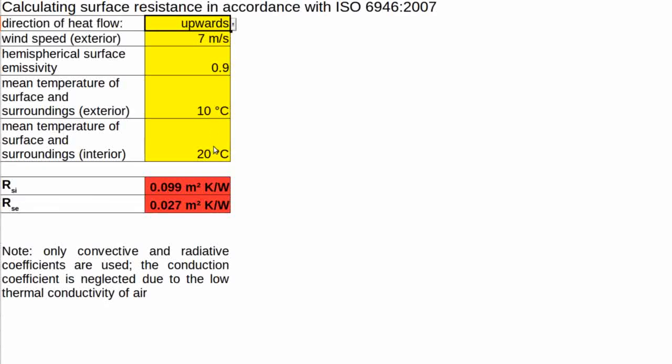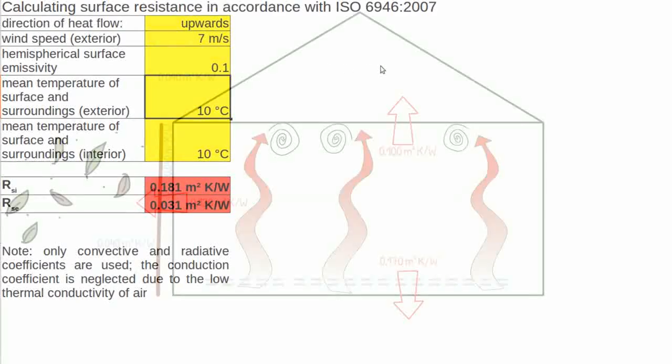Changing the emissivity of the surface has dramatic impact. 0.1 would equate to a shiny metal here. Be aware though that very few surfaces stay shiny in use.